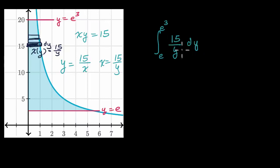So let's evaluate this. So we take the antiderivative of 15 over y, and then evaluate at these two points. So this is going to be equal to antiderivative of one over y is going to be the natural log of the absolute value of y. So it's 15 times the natural log of the absolute value of y. And then we're going to evaluate that at our endpoints.